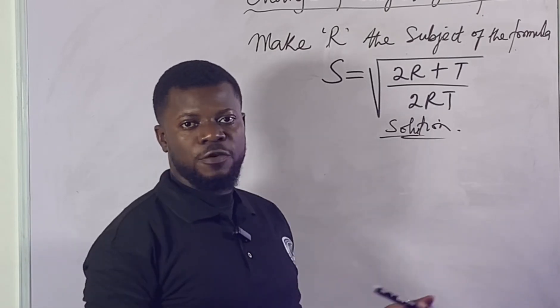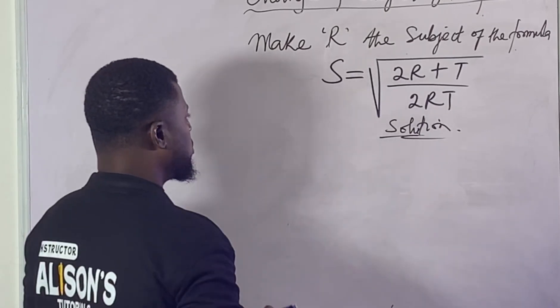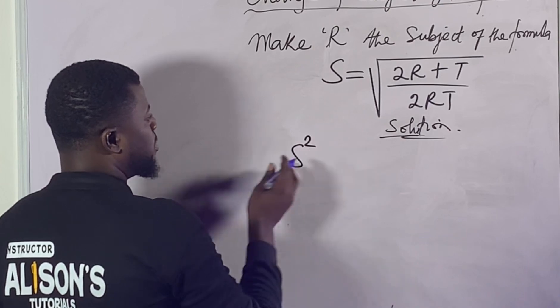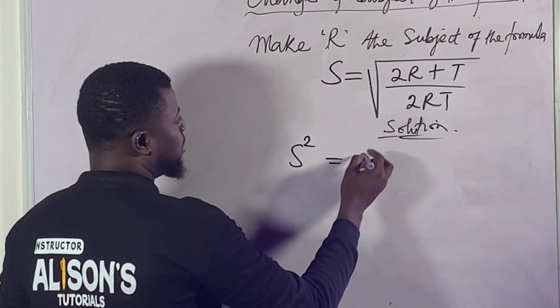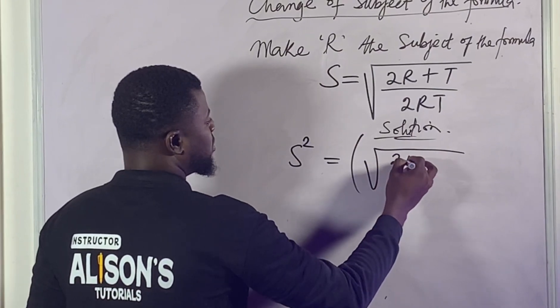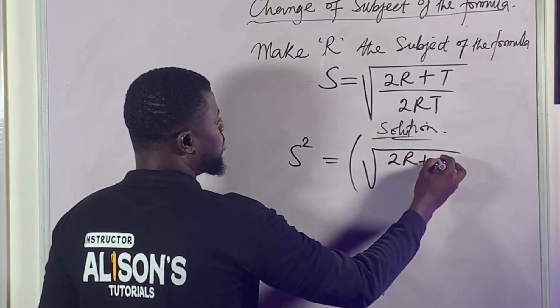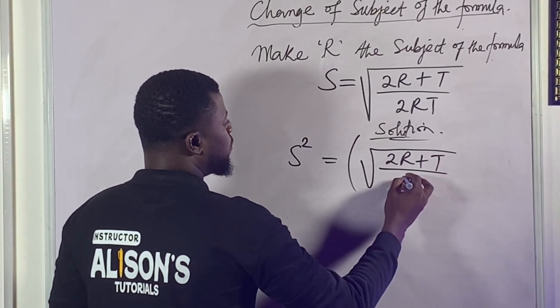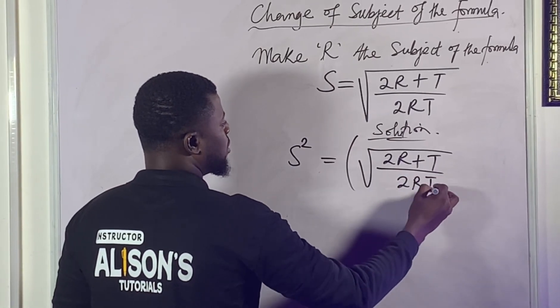So how do we take the square of both sides of the equation? This is what you need to do: just add the square here on the S, and then on this part you also do the same thing. Keep in mind we have this to be 2R + T over 2RT. Please make sure to add square to this.